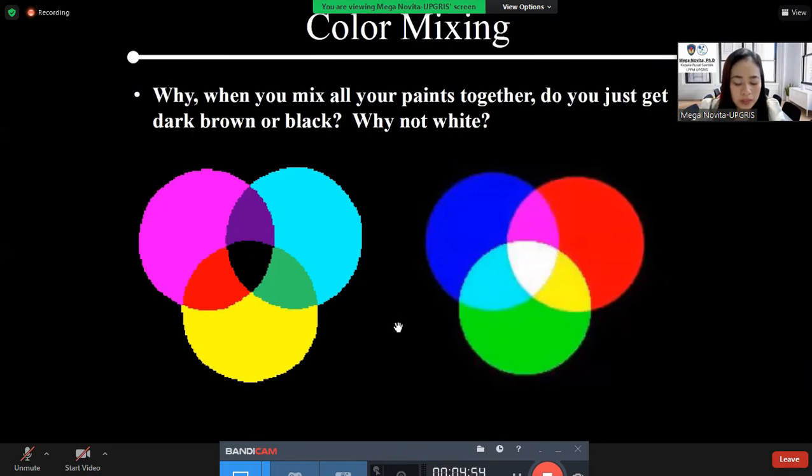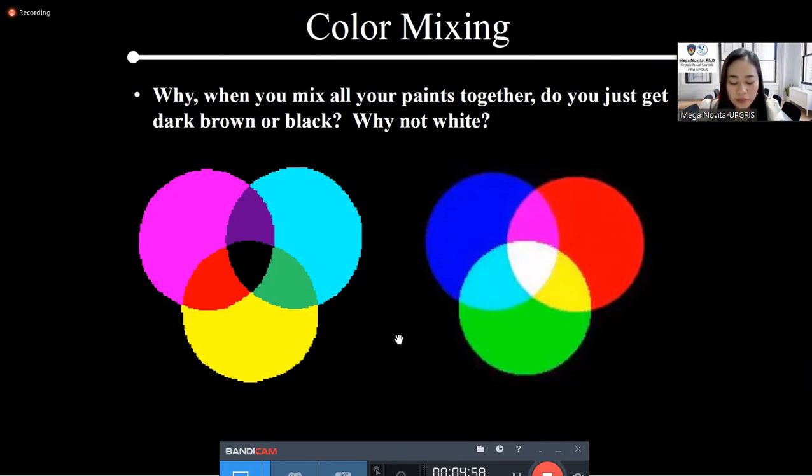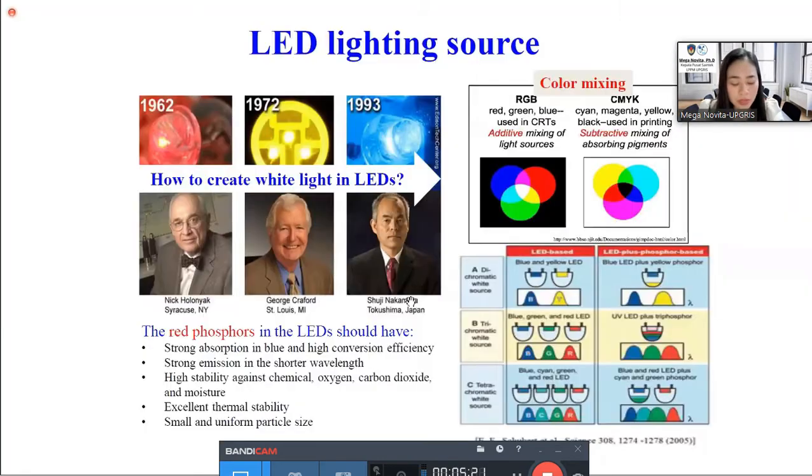Well, do you notice when we mix all paint colors, we will get black. Yes, because there are two different types of color mixing. Subtractive and additive. Subtractive is for paint color, absorbing all pigments, while the additive is for light source. You see, there are three pigment colors. However, the results of color mixing is different.